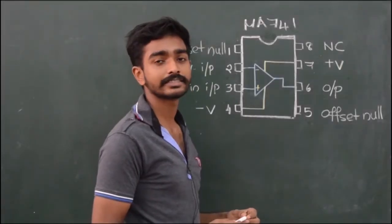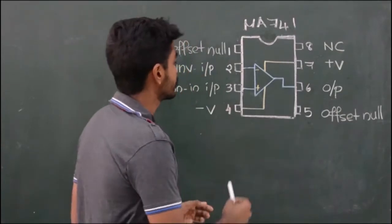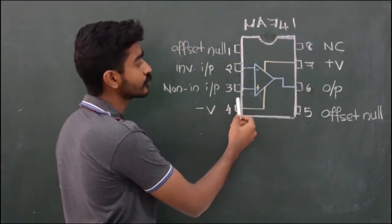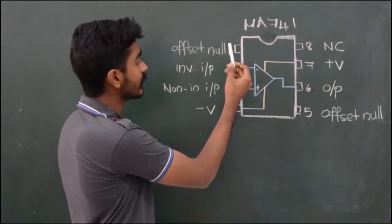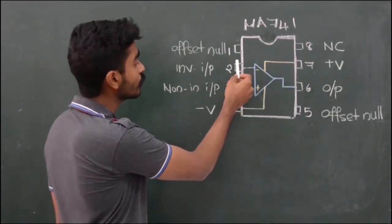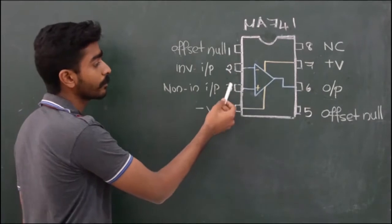Now, let us move on to the pin diagram of IC MUA741. The terminals 7 and 4 are used to bias the operational amplifier. Either of the terminals 2 or 3 is used to apply the input.